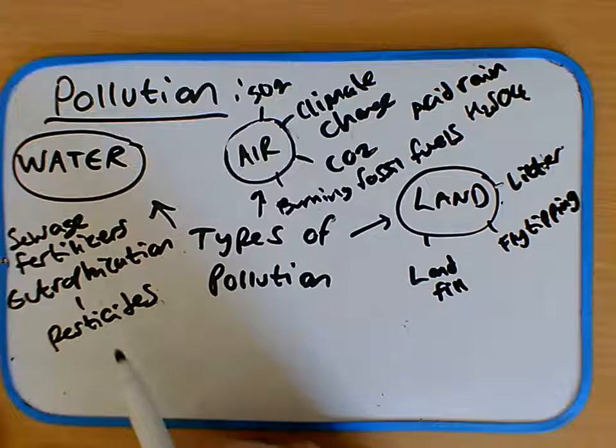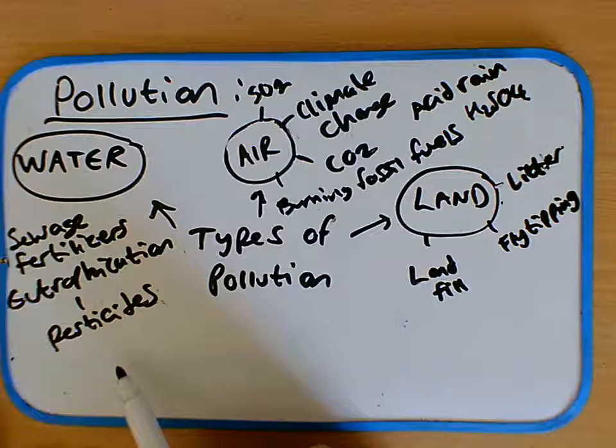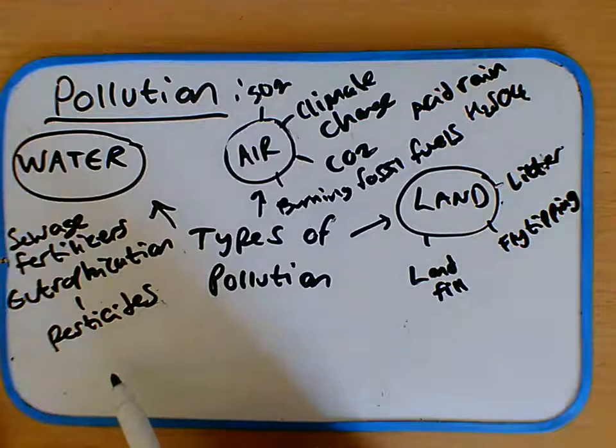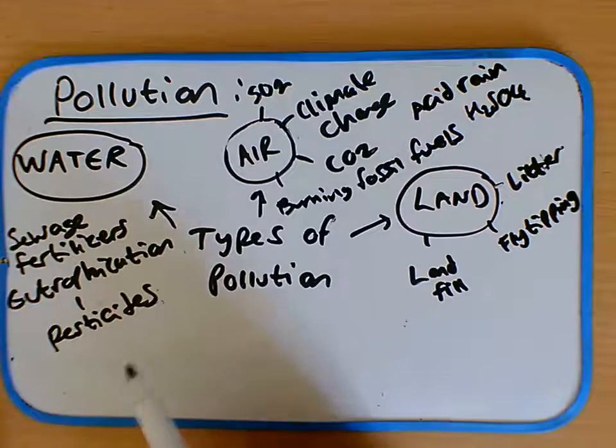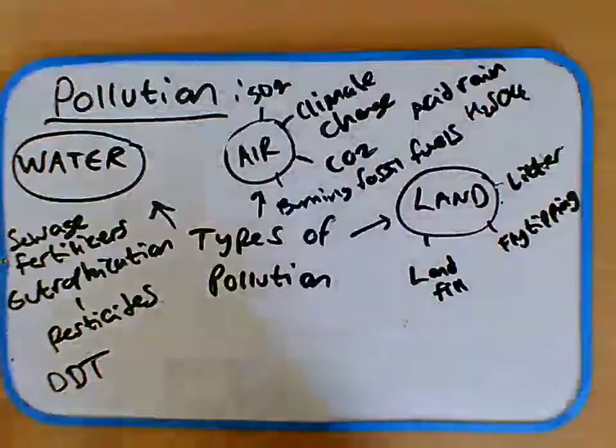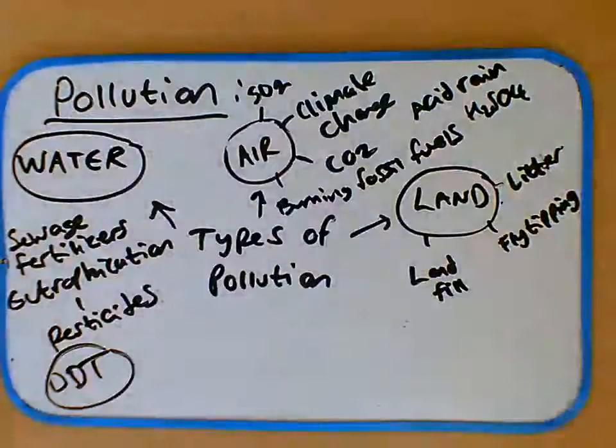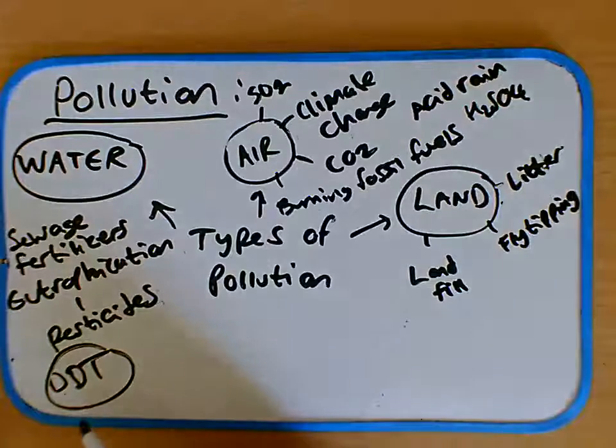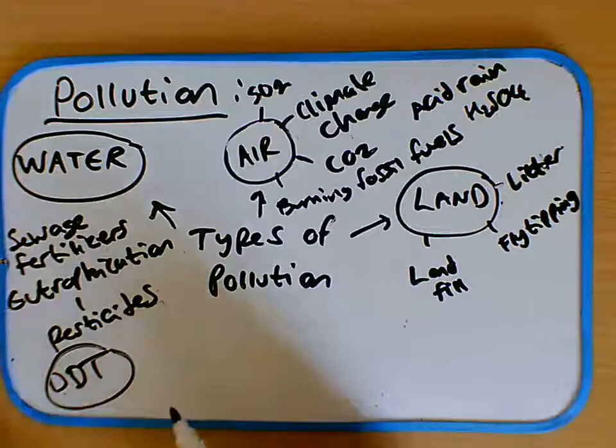However, what happens is when it rains, that's going to wash some of those pesticides into rivers and lakes and streams. And the pesticide chemicals are going to end up in the water system. So a good example of this is DDT. DDT is now a banned pesticide. It was commonly used in the 60s, 70s, early 80s.